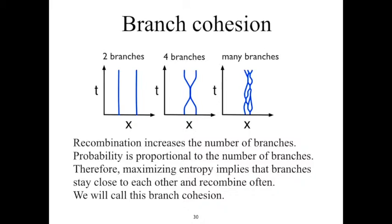The branches of M will tend to stay close to each other because recombination increases the number of branches. The probability is proportional to the number of branches, therefore maximizing the entropy implies that the branches will stay close to each other and recombine often. In the diagram on the left, we see a branched 0+1 manifold with two branches. In the middle diagram, the branches recombine, and there are four branches in total.